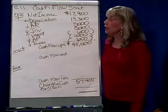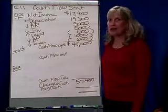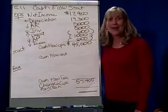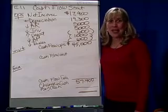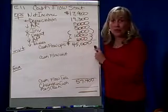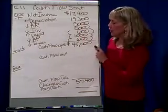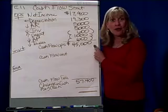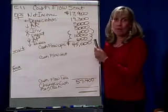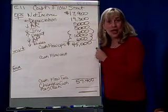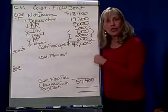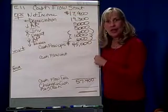Financial accounting. We're doing exercise 11, which is a complete statement of cash flows. So far, we've done the operating section and figured out that $45,000 of cash was the result of our daily operations. Now we're going to look at our investing section.